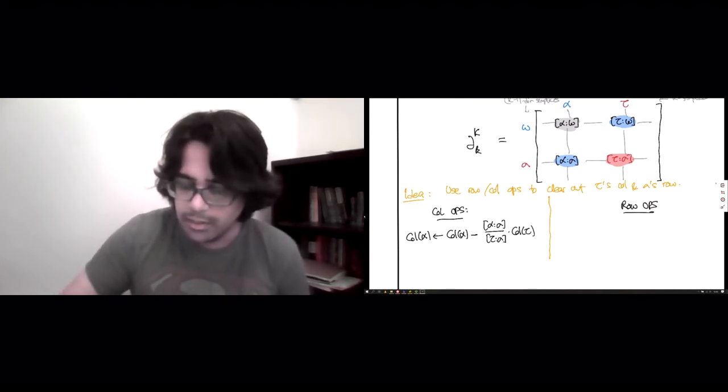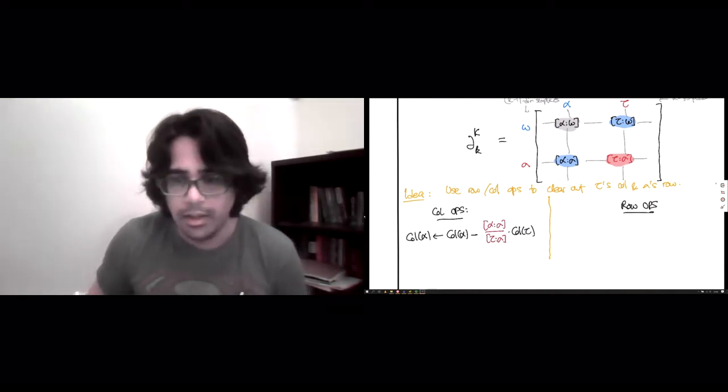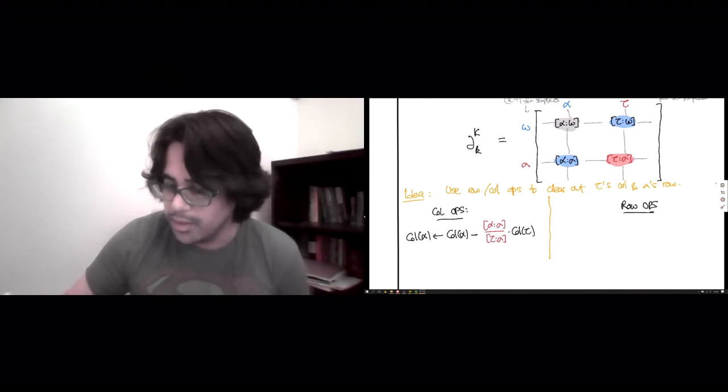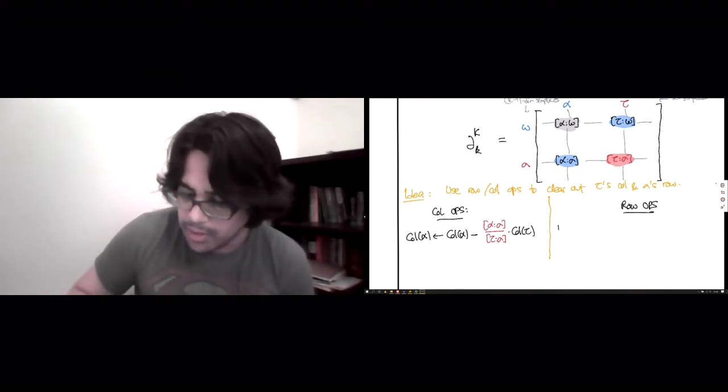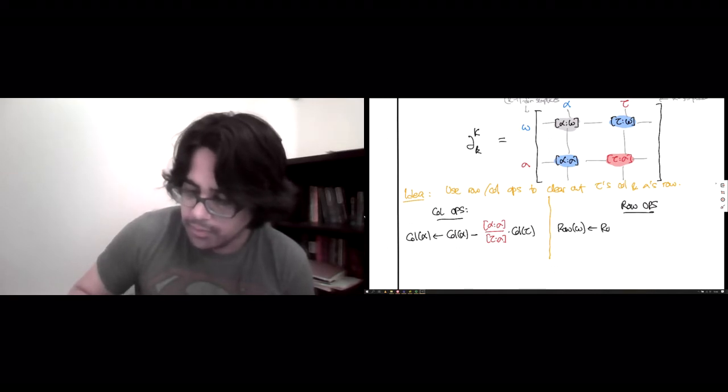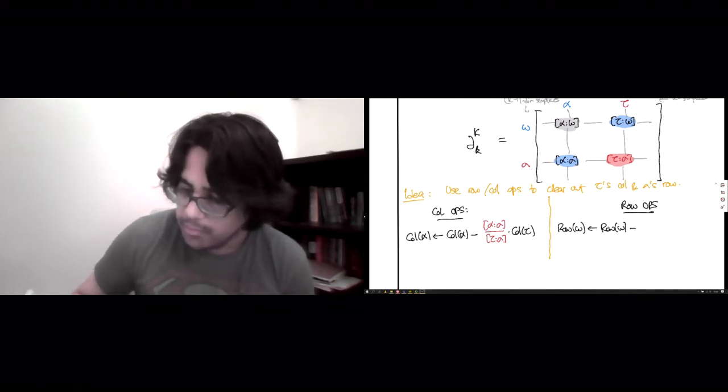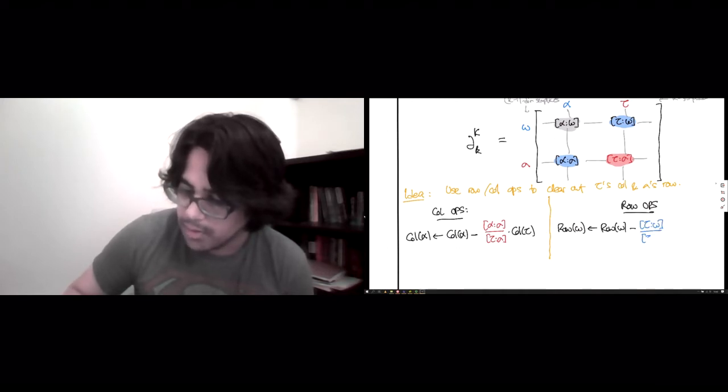So, this scalar, don't forget it, is going to be important, so I'll make it red. Similarly, the row operation you need is that the row of omega is going to get itself plus, or rather minus again, there's a scalar, which is tau incidence with omega divided by tau incidence with sigma, and all of that multiplied by the row of sigma.